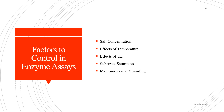Factors to control in enzyme assays. First is salt concentration: most enzymes cannot tolerate extremely high salt concentrations, as the ions interfere with the weak ionic bonds of proteins. Second is the effect of temperature: all enzymes work within a temperature range specific to the organism. Increase in temperature generally leads to an increase in reaction rate, but higher temperatures can lead to a sharp decrease in reaction rate due to denaturing of protein structure resulting from the breakdown of weak ionic and hydrogen bonds.